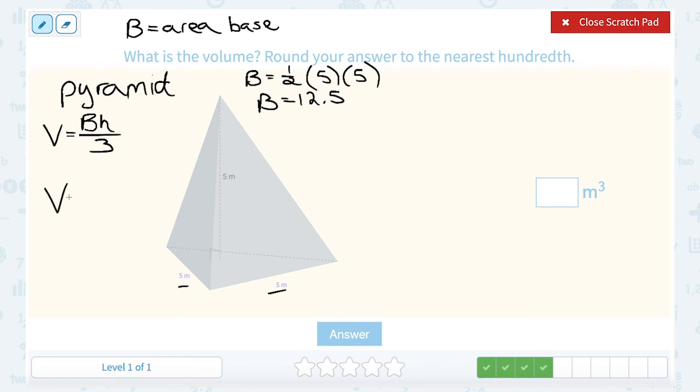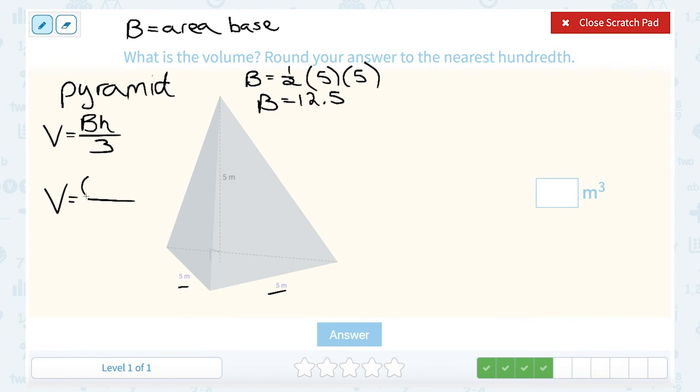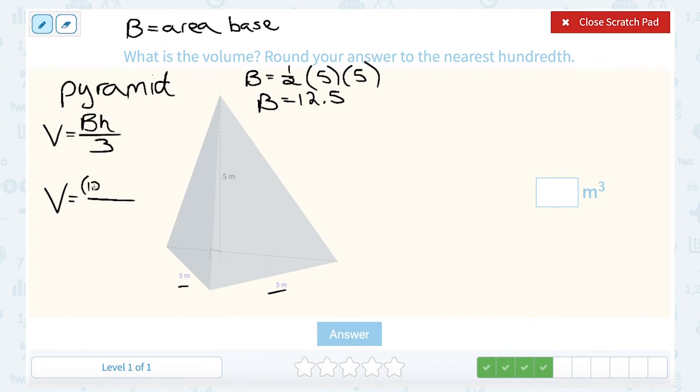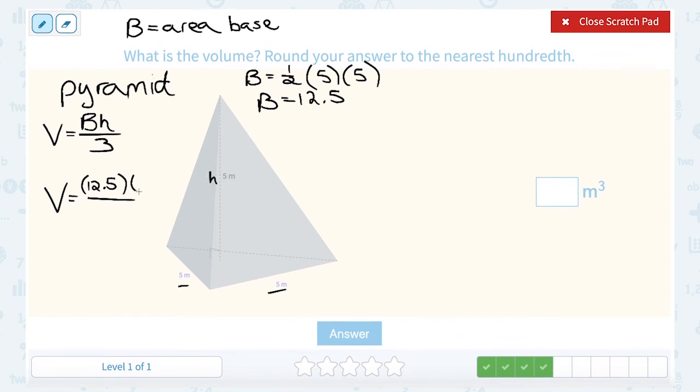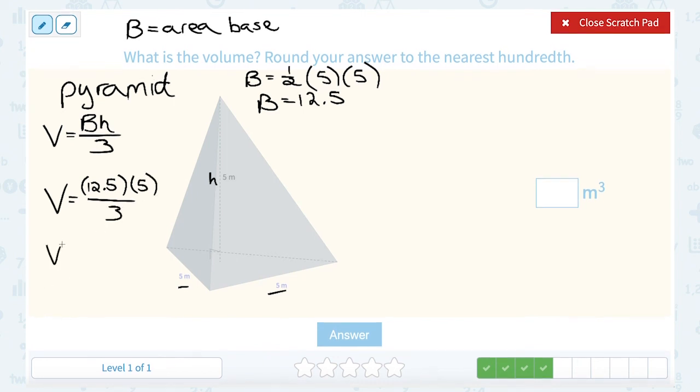And I'm going to plug that into my volume formula. So volume equals area of the base, which we already figured out was 12.5, times the height of our pyramid. Well, the height of our pyramid is 5 meters. And then we have to divide the entire thing by 3. Okay, so let's multiply across the top first, 12.5 times 5. That's going to give me 62.5. And then I still have to divide it by 3.